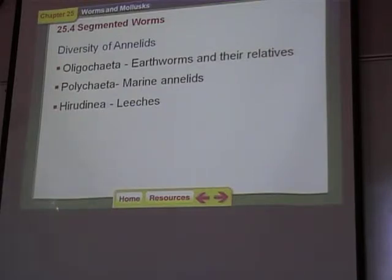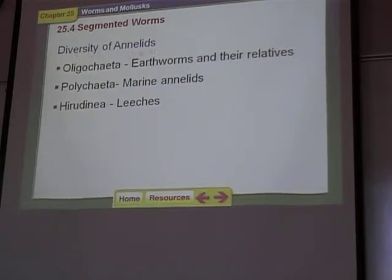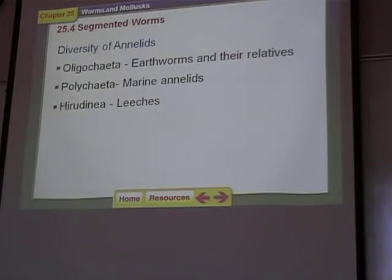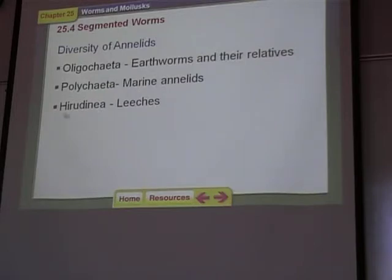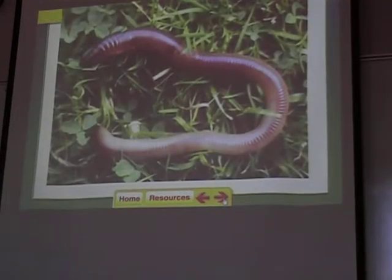Here are the different phyla. We're in Phylum Annelida — annelida means segmented worms — and there are three classes you need to know. Class Oligochaeta are the earthworms. Class Polychaeta are the marine worms. And Class Hirudinea are the leeches. Oligochaeta: earthworms. Polychaeta: marine worms — marine means salt water. And Hirudinea: leeches.